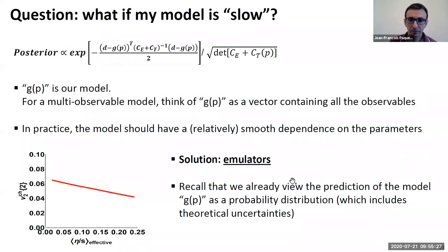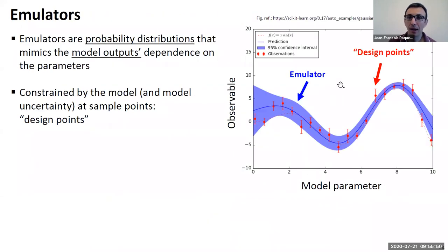Now, again, remember that we're considering, we're thinking of the model as a problem, of the output of the model as a probability distribution. So these emulators are probability distributions as well. So what you have is a probabilistic predictor for your model. Now, if you want to look at this more visually.